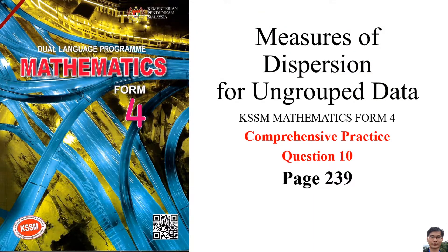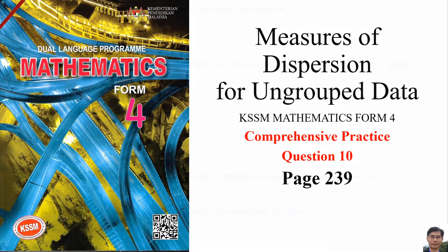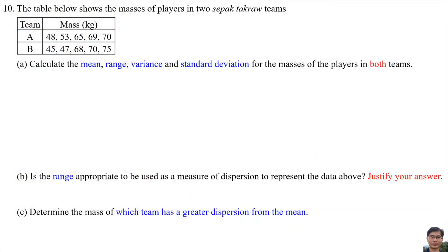Measure of Dispersion for Ungrouped Data, KSSM Mathematics Form 4, Comprehensive Practice Question 10, Page 239. The table below shows the masses of the players in two sepak takraw teams. Part (a): Calculate the mean, range, variance and standard deviation for the masses of the players in both teams.